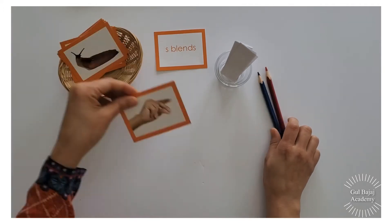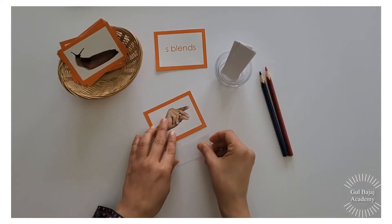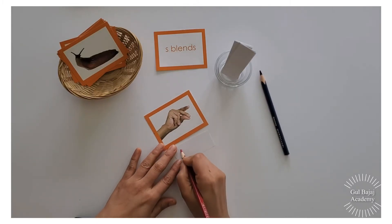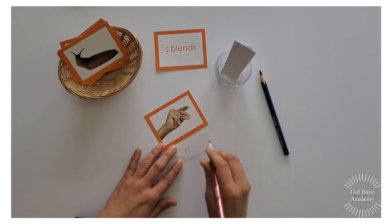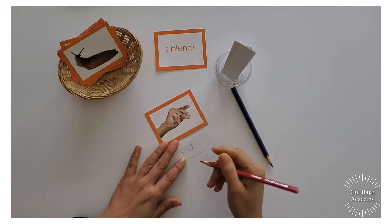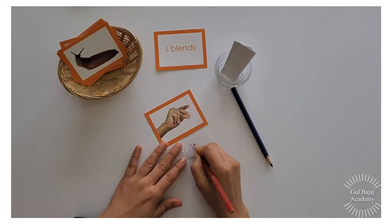So let's pick one picture, paper, and let's make the label. Snap. S, n, a, and I'm going to finish up with my ending consonant p. Snap.